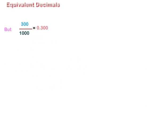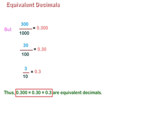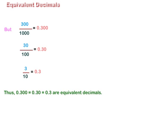But 300 upon 1000 can also be written as 0.300. 30 upon 100 is written as 0.30, and 3 upon 10 is written as 0.3. Thus, 0.300 is equal to 0.30 is equal to 0.3. These are equivalent decimals.